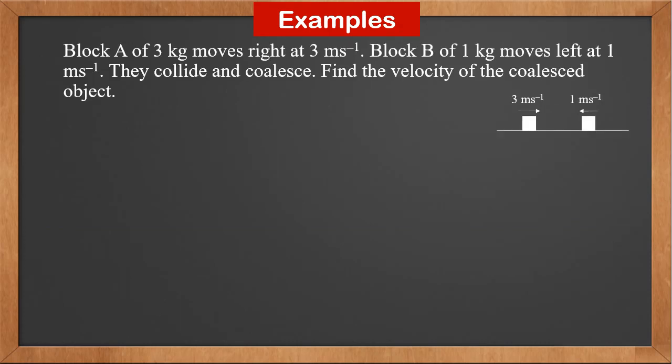Block A of 3 kilograms moves right at 3 meters per second. Block B of 1 kilogram moves left at 1 meter per second. They collide and coalesce. Find the velocity of the coalesced object. Before the collision, the momentum is 3 times 3 minus 1 times 1. After the collision, the two blocks become one with mass 3 plus 1, so the momentum is 4V. Therefore, V is 2 meters per second.